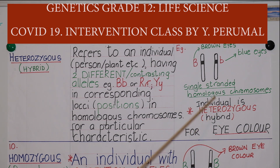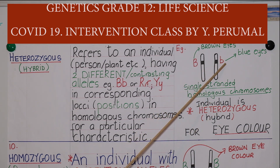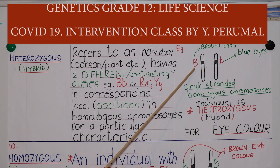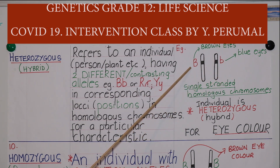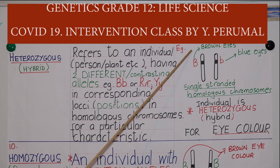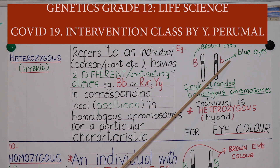If we look at this example of single-stranded homologous chromosomes, this individual would be heterozygous because there are two different alleles for eye colour. This allele codes for brown eyes and this allele codes for blue eyes. This allele is written as a capital letter because it is a dominant allele, and this is written in small letters because it is a recessive allele.